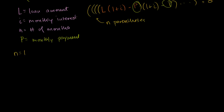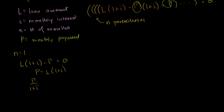Let's start with N equal to 1. You take out your loan, compound it for one month by (1 + I), then pay your monthly payment P — and since this mortgage pays off in one month, you're done with nothing left over. Solving for P: P equals L times (1 + I), or equivalently, dividing both sides by (1 + I) gives P over (1 + I) equals L. I'm doing this to show a pattern that will emerge.